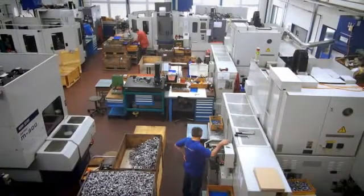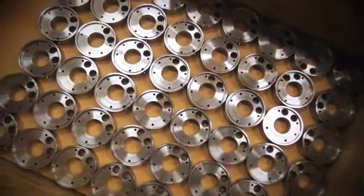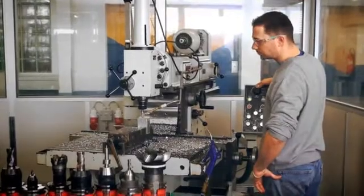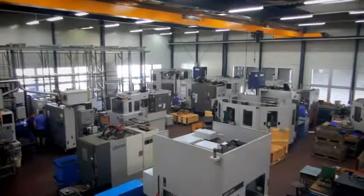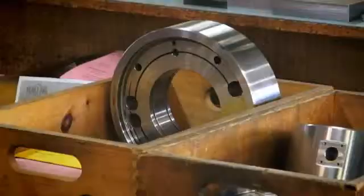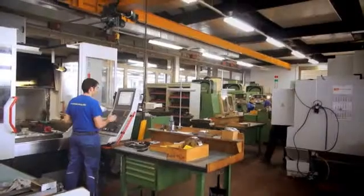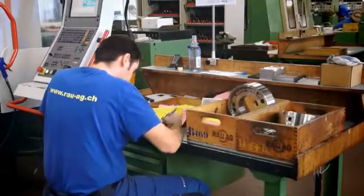Hardness testing is one of the oldest and most commonly applied inspection methods for metallic materials. One reason for this is that hardness itself is a useful material parameter. Another reason is that there are more or less direct relationships between hardness and other important material properties that are much more difficult to measure directly, such as tensile strength, yield strength, or fatigue behavior.